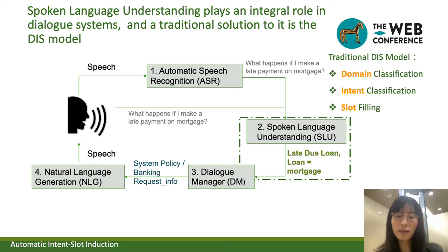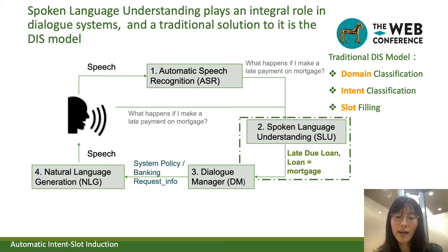In this way, we can obtain domain, intent, and slot, and feed them to the downstream dialogue manager. In order to obtain the three outputs, we need a full schema including all labels. For example, for the input "what happens if I make late payment on mortgage?", the intent is "late due loan", and the slot-value pair is mortgage and loan. All other possible labels and key-value pairs need to be predefined.